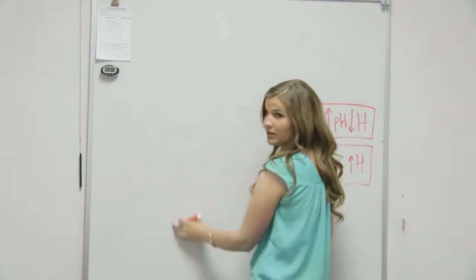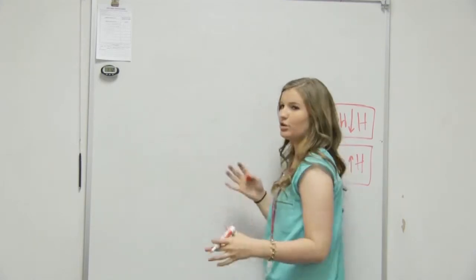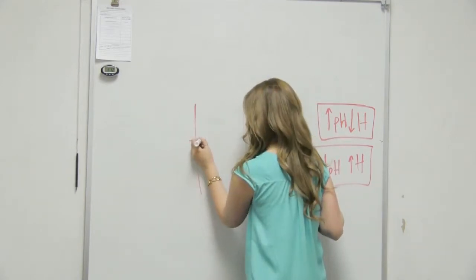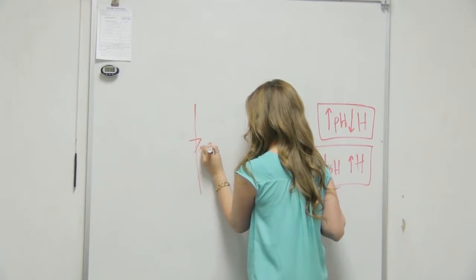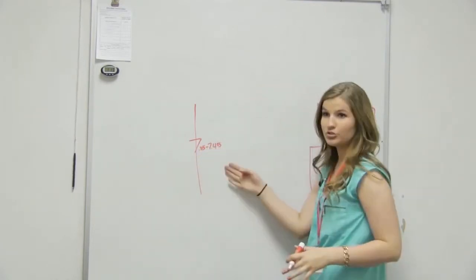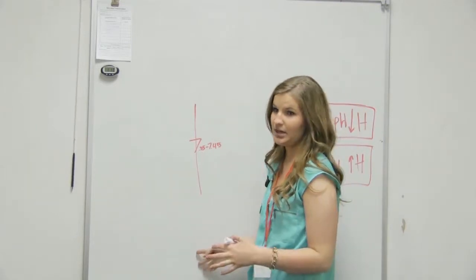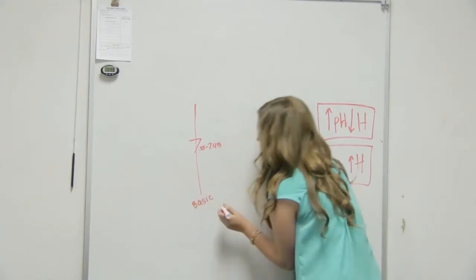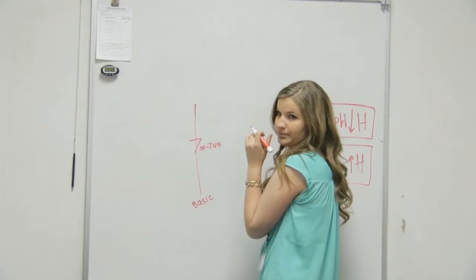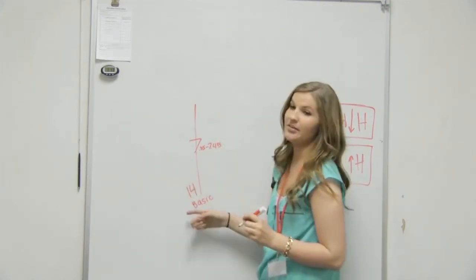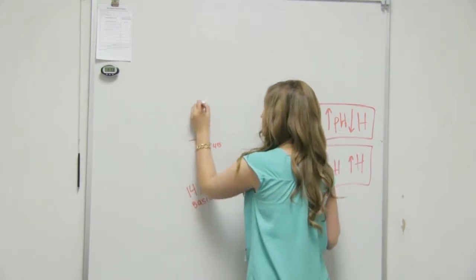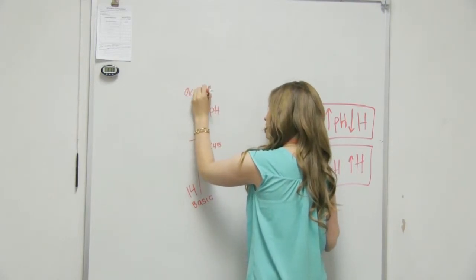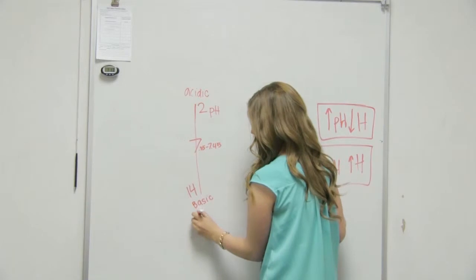And then we have our pH scale. What was the neutral, or what's our blood? 7.35 to 7.45 is going to be our neutral — it's not super acidic, it's not super alkaline or basic. This is going to be our basic. Is basic going to be a higher number or a lower number? Higher. So that could be like maybe oven cleaner, whereas 2 would be like lemon juice — so that's acidic. The other word for basic is alkaline.